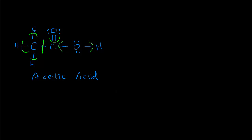Now we can calculate oxidation numbers. For hydrogen — and all the hydrogens in this molecule are equivalent — the oxidation number is the normal valence of one minus the number of assigned electrons. Since no electrons are assigned to hydrogen in this structure, the oxidation number is plus one. All hydrogens in acetic acid are in the +1 oxidation state.